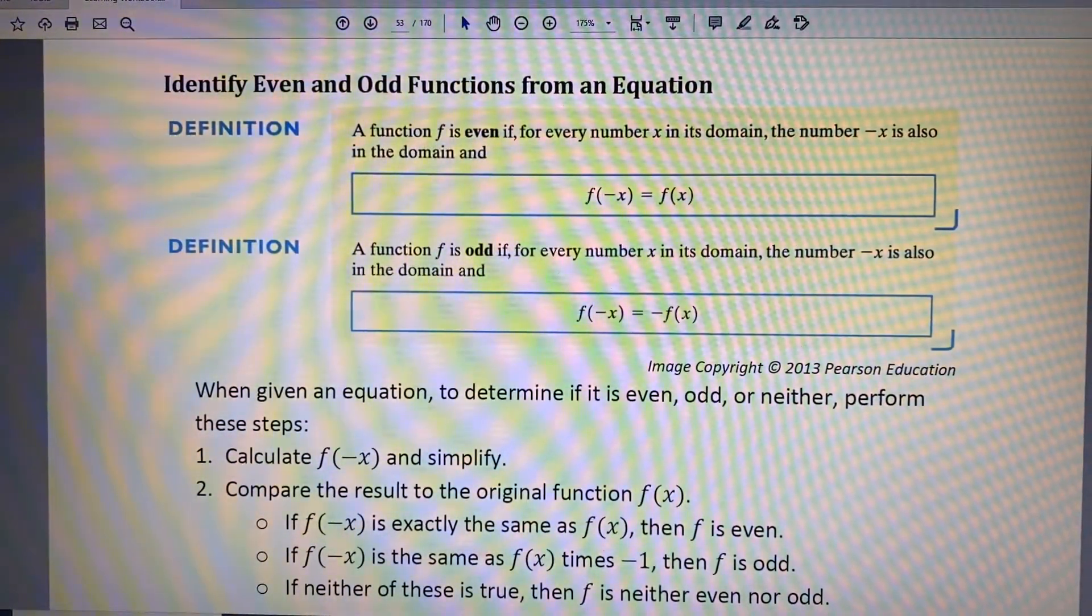Step 2. Compare the result to the original function. If f of negative x is exactly the same as f of x, then f is even.